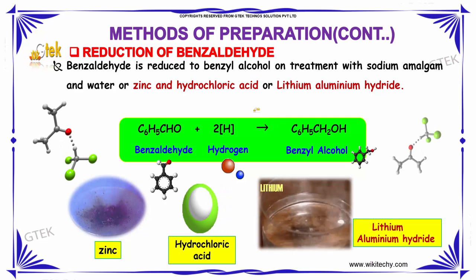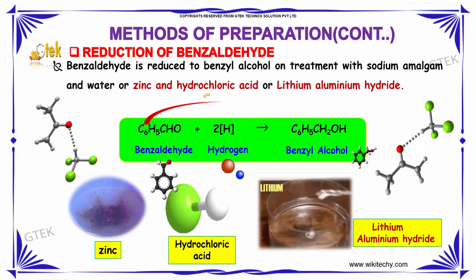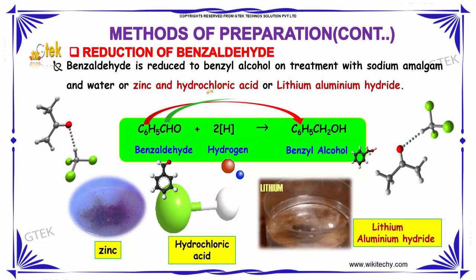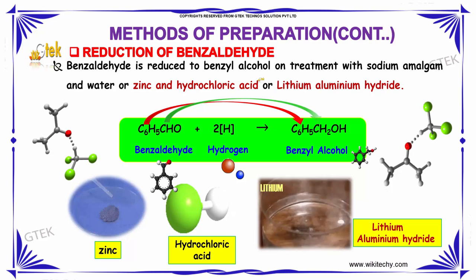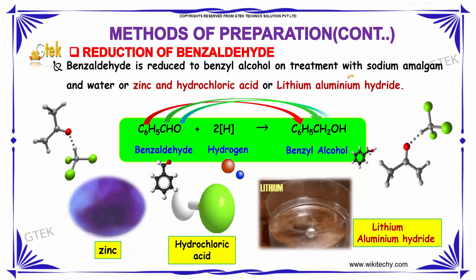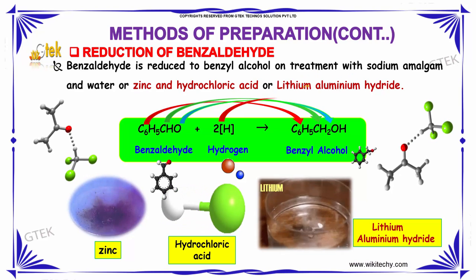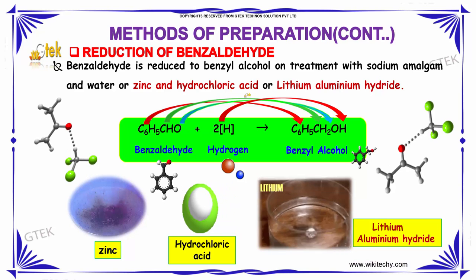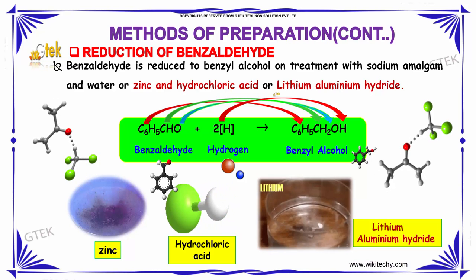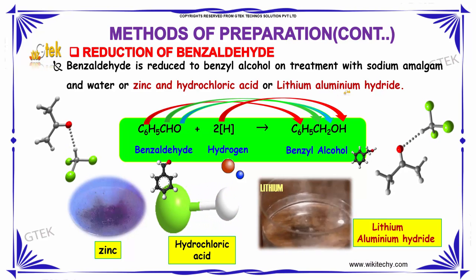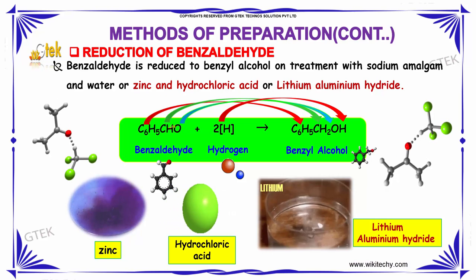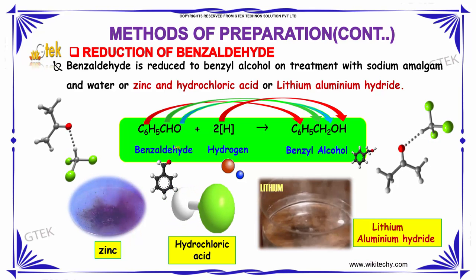Let us now study the reduction of benzaldehyde. Benzaldehyde is reduced to benzyl alcohol on treatment with sodium amalgam and water, or zinc and hydrochloric acid, or even lithium aluminum hydride.